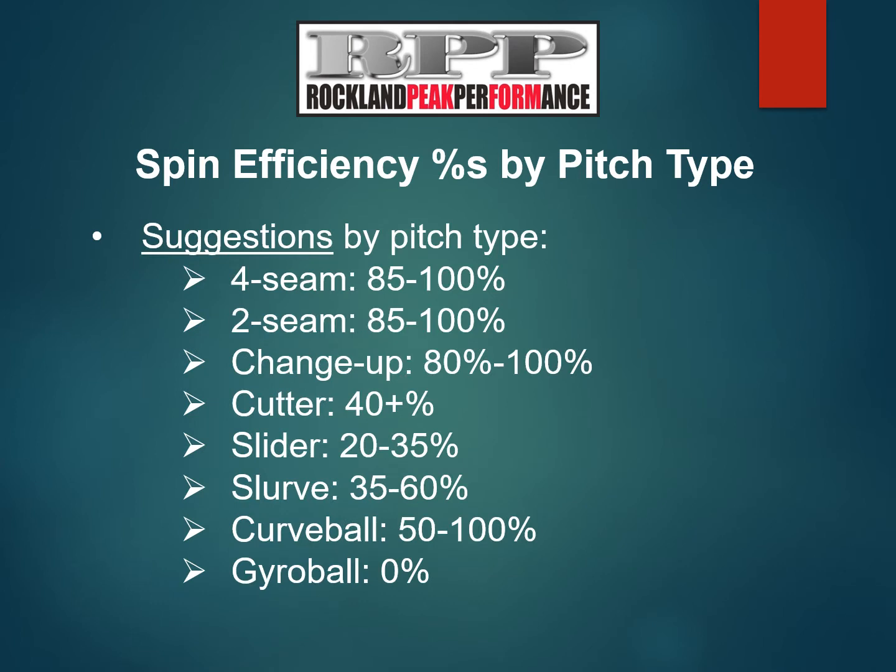This is a summary of our suggestions on spin efficiency by pitch type. Others may disagree with some of these, but this has been our experience and they have worked quite well for us. Four-seam and two-seam fastballs should be in the 85–100% range, but the higher the better. It just means additional movement on the ball, and less cutting means more velo. We will touch on this a little bit later.